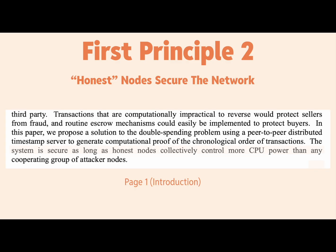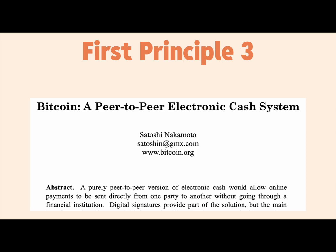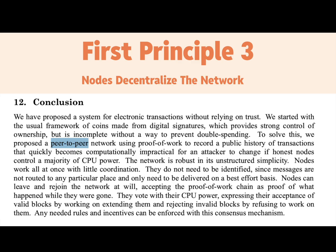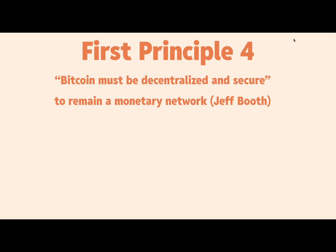First Principle Two: honest nodes secure the network. From page one of the introduction: 'the system is secure as long as honest nodes collectively control more CPU power than any cooperating group of attacker nodes.' Stripping out subjective terms, the principle is simply that nodes secure the network. First Principle Three: nodes decentralize the network. The word decentralization isn't actually used in the white paper, but peer-to-peer is used everywhere and essentially means the same thing — nodes keep the network decentralized.